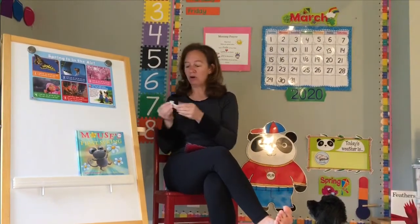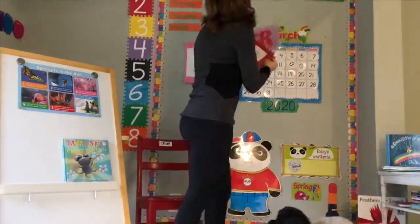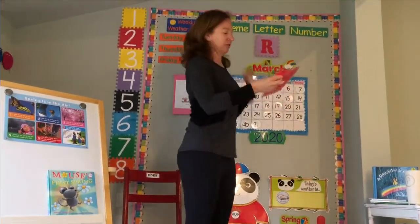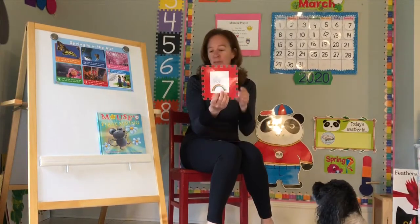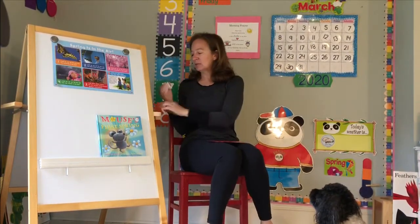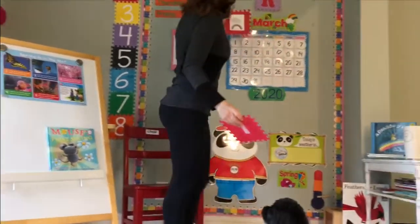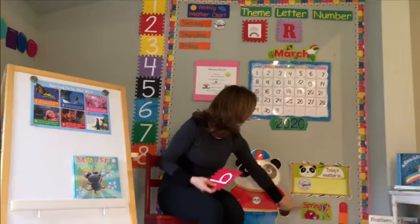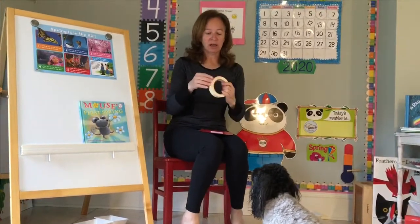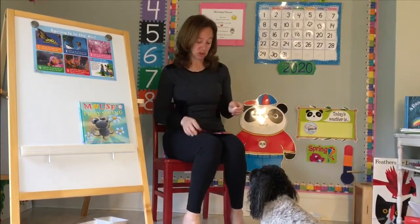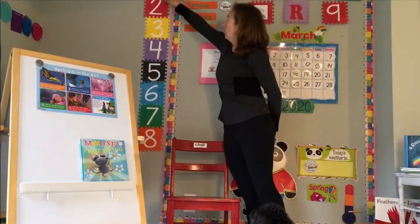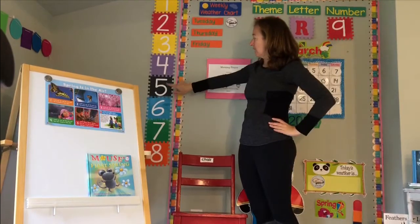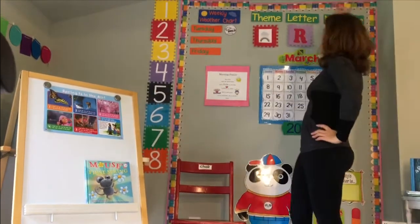So why are we talking about the letter R? We're going to be talking about today and Thursday — rain and rainbows. They both begin with R. And these are things we start to see when we start the season of spring. So we're going to be talking about signs of spring. And we're also going to talk about the number nine this month. We've done one, two, three, four, five, six, seven, eight — and now this month we'll talk about the number nine.